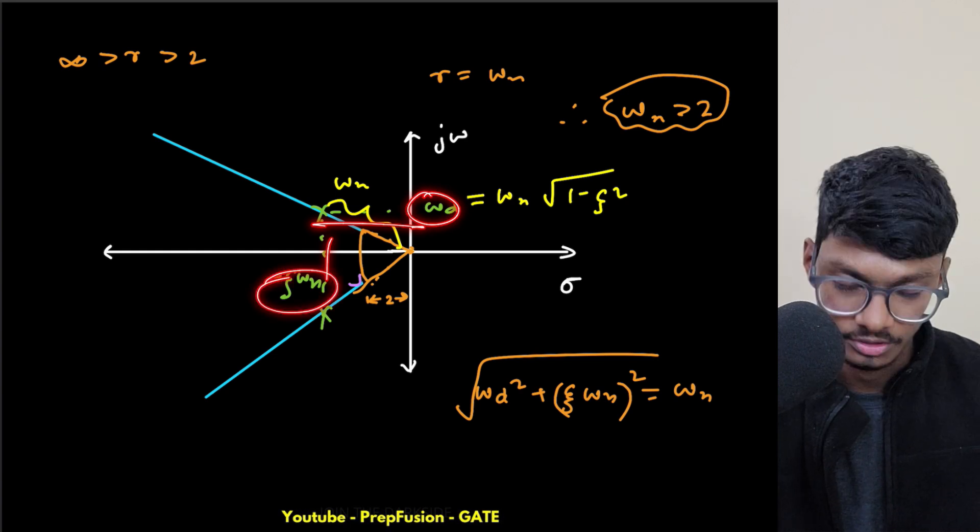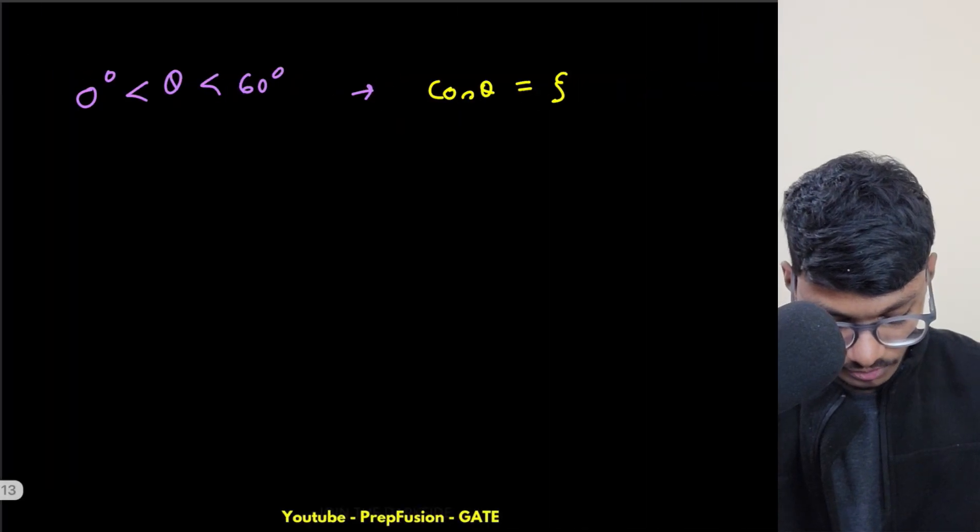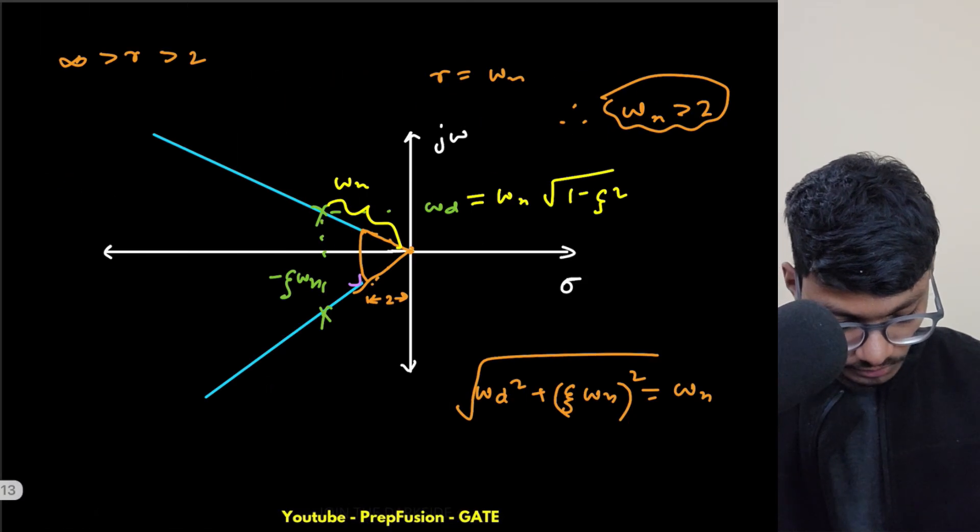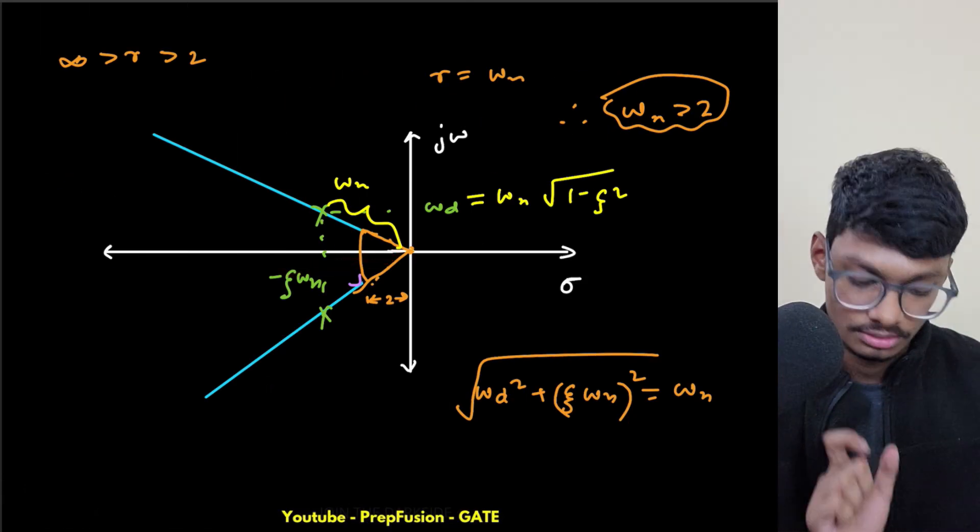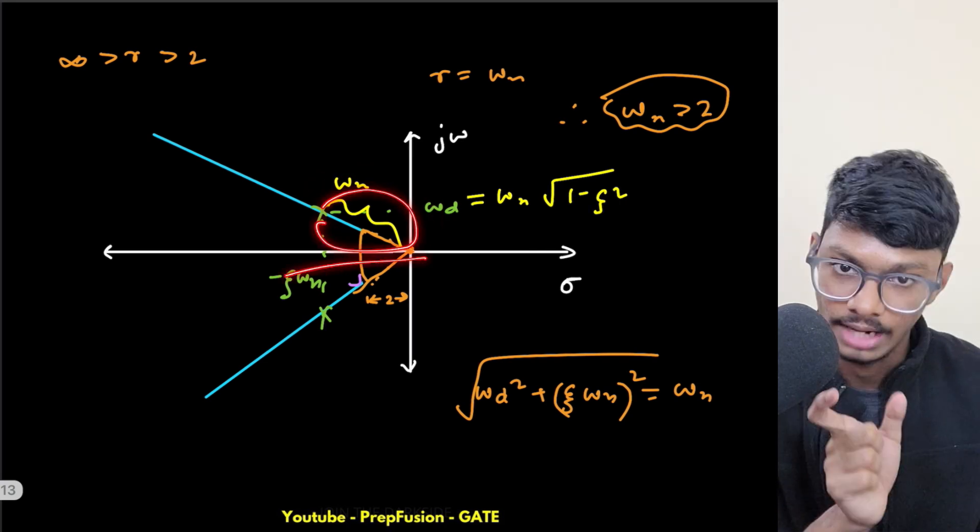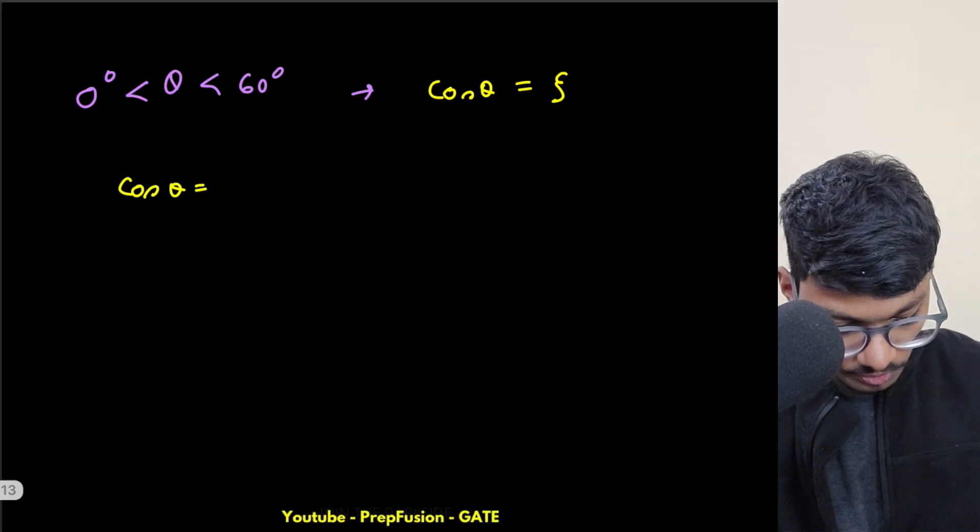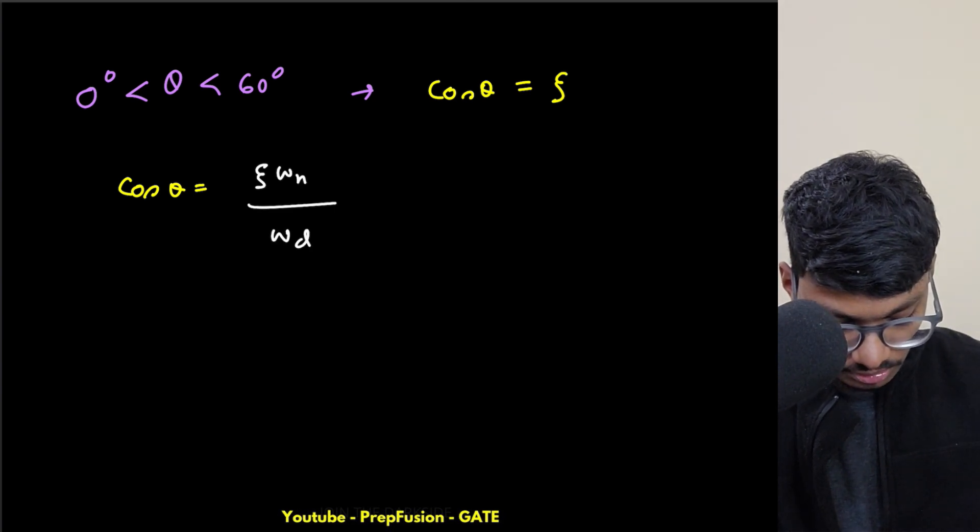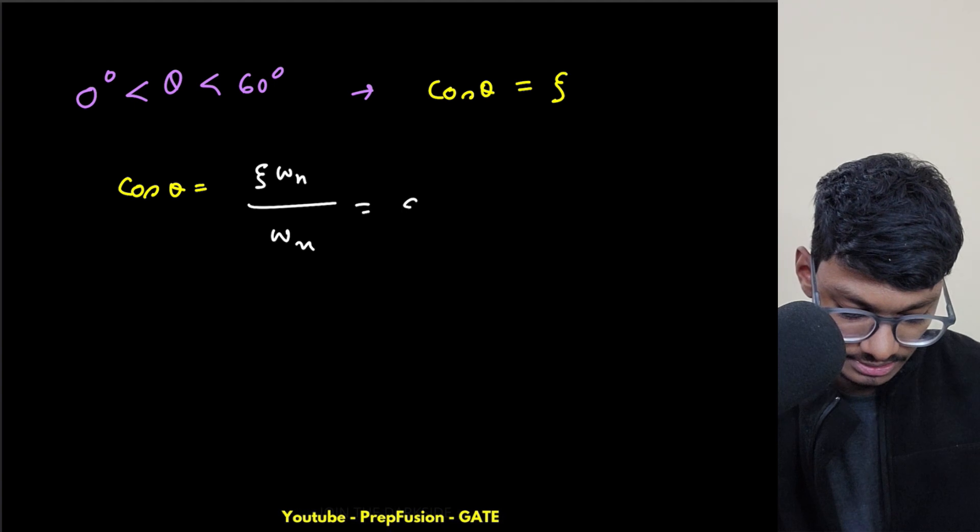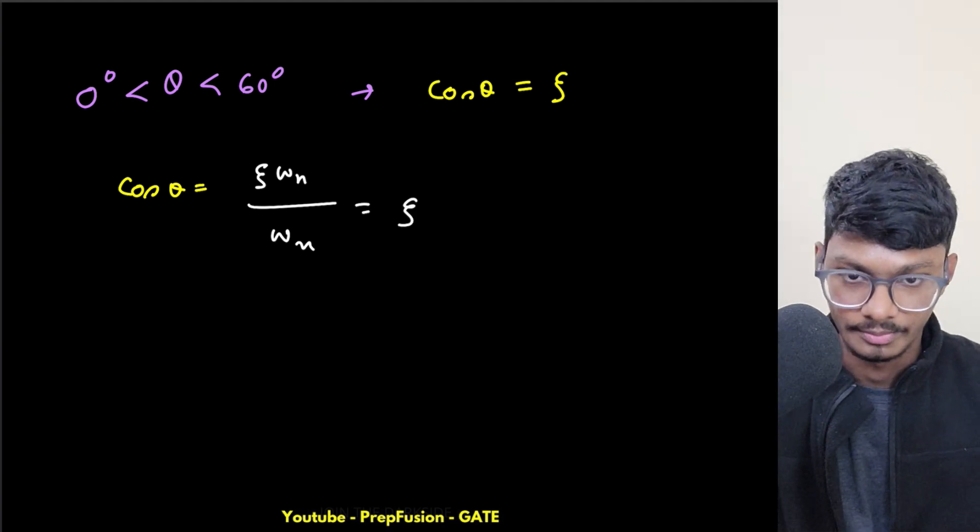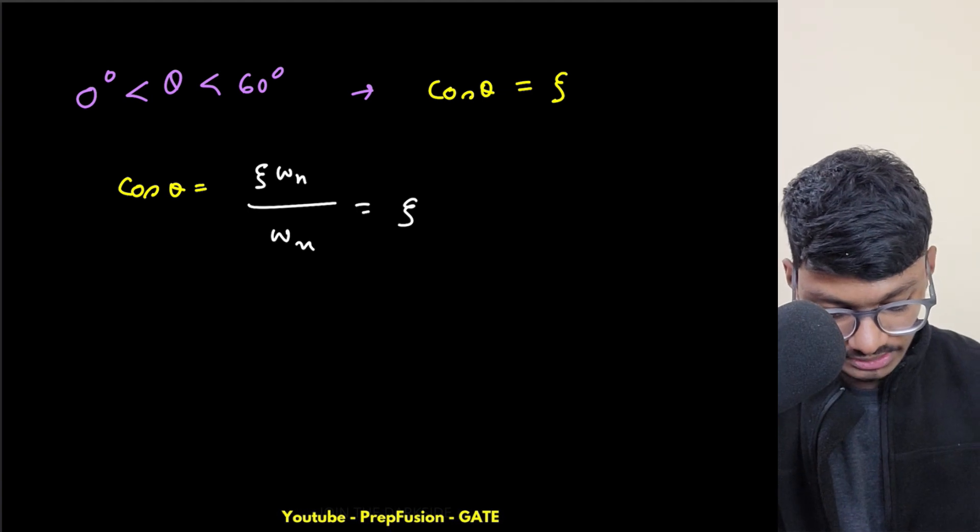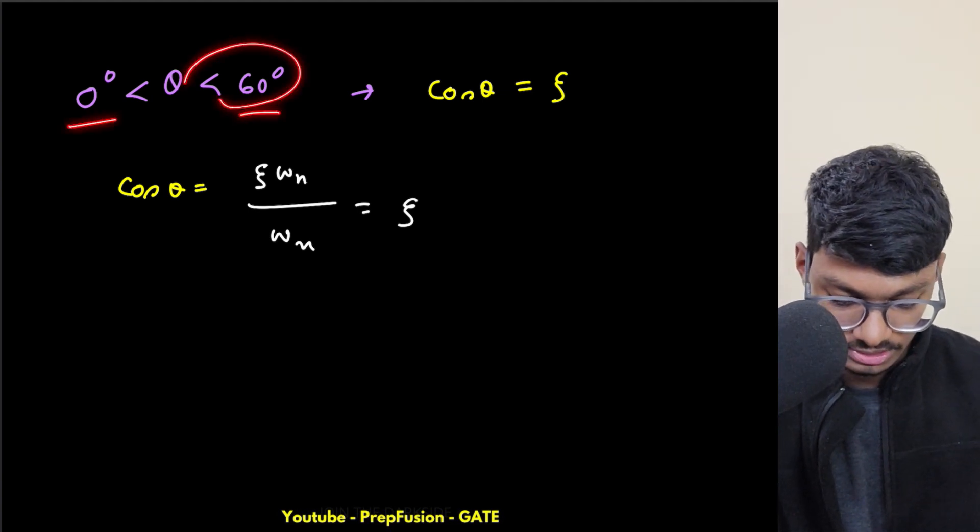Or if you don't remember, you can easily derive it. How? We know the y component is omega d and x component is zeta omega n. So what will cos theta be? It's adjacent over hypotenuse, base by hypotenuse. So zeta omega n by omega n itself gives you zeta itself. That is how you can recall it correctly if you don't remember directly the zeta formula.